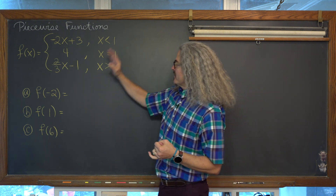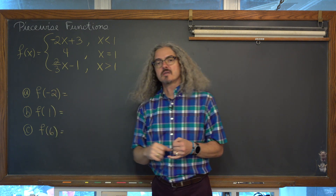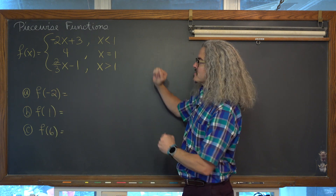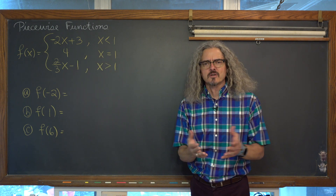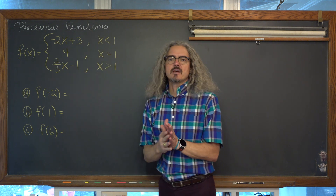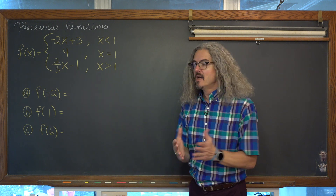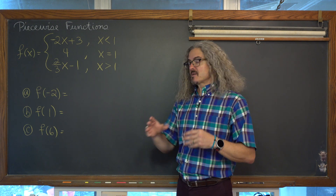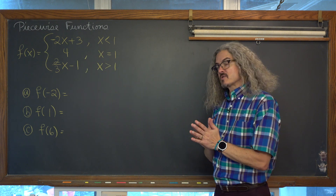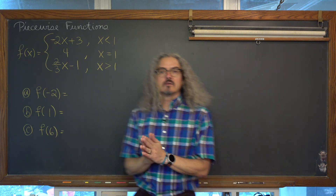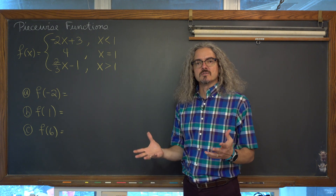We're going to start off with, given a piecewise function, how do we evaluate it for x is equal to negative 2, 1, and 6. We're then going to graph this piecewise function. Each of the parts are going to be representing linear functions. Any one of the pieces in a piecewise function could involve trig functions, natural log functions, they can be more complicated, but we're just doing the basics. We're going to then graph that, and then finally talk about the domain and range of the resultant graph.